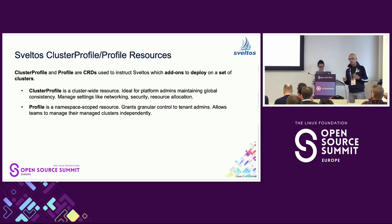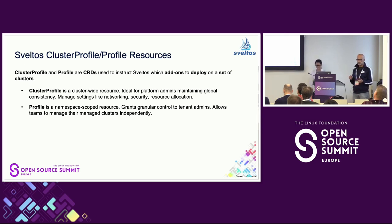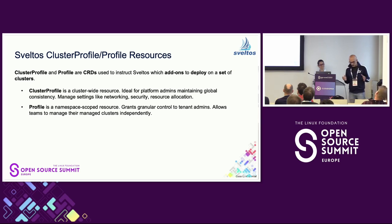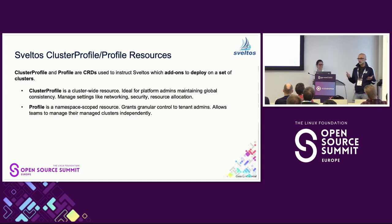Sveltos offers two main custom resource definitions that allow you to specify what you want deployed where: ClusterProfile and Profile. They are almost exactly the same — they allow selecting a set of clusters using a cluster selector, which is a Kubernetes label selector, and listing all the add-ons you want deployed. The key difference is that ClusterProfile is a cluster-wide CRD, while Profile is a namespaced CRD. One use case is when you own all clusters and can simply use a ClusterProfile to match any cluster.